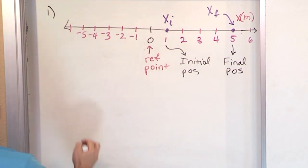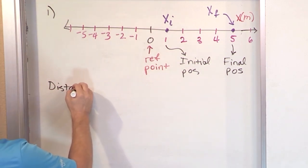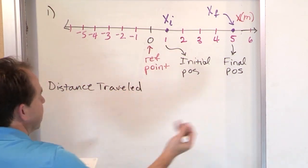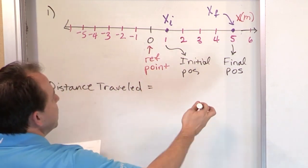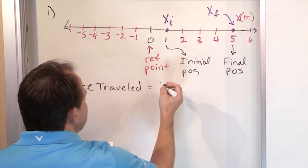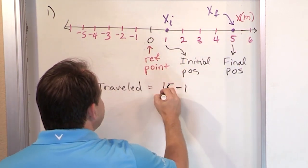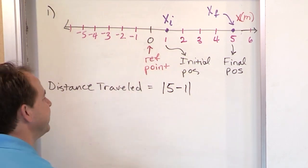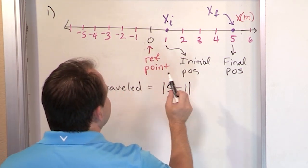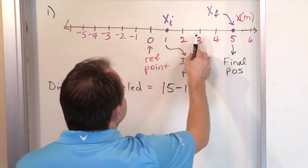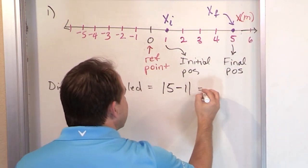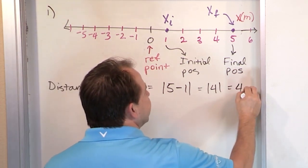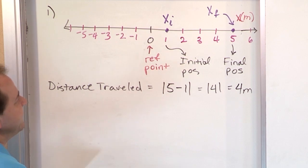What if I want to calculate the distance traveled between initial and final? Well, you ended up at five and started from one, so you can figure out it's five minus one. I'm going to put absolute value signs around this — the distance traveled is the absolute value of five minus one. It's the same as counting one, two, three, four units. Five minus one is four, and the absolute value of four is just four. So the distance traveled in this example is trivially easy to see — it's four meters. We always do subtraction to find distance traveled.